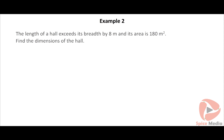Let us see an example. The product of two consecutive numbers is 56. Find them. The keywords in this statement are: two consecutive numbers, product, and is 56. Click on the solution button to view the solution.